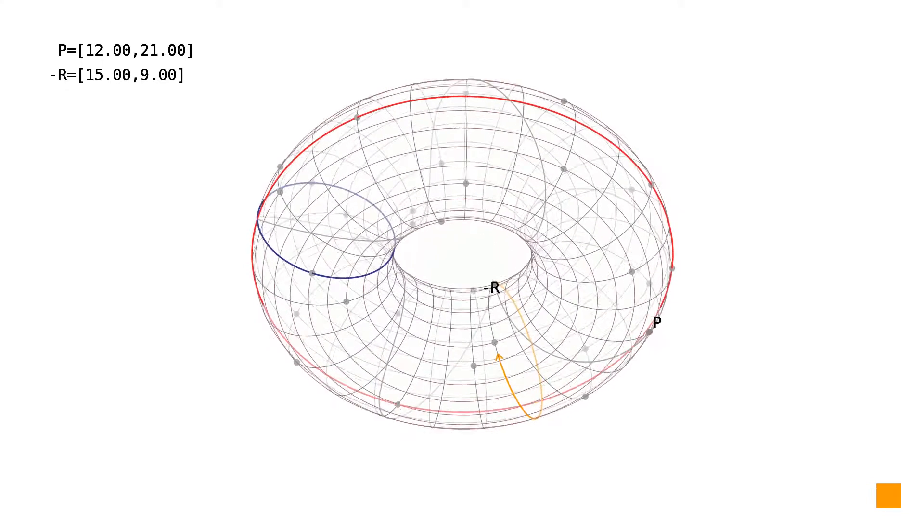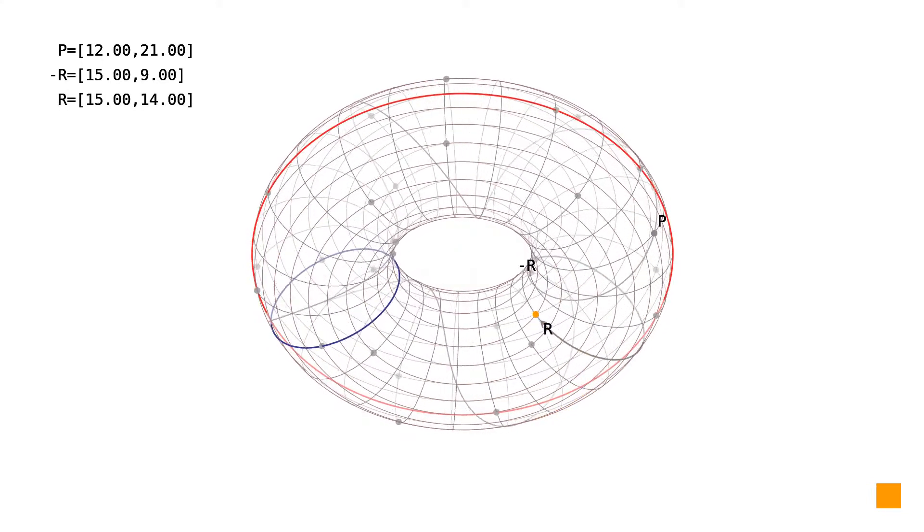And once again, we just flip this point over the x-axis and get the resulting point R, which is the double of the point P.